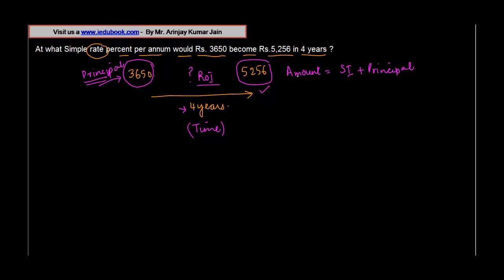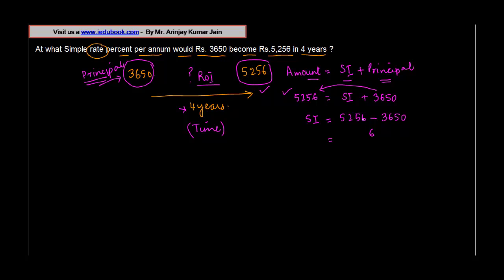Amount equals simple interest plus principal, so 5256 equals simple interest plus 3650. We can calculate the simple interest as 5256 minus 3650, which gives us 1606 as the simple interest.